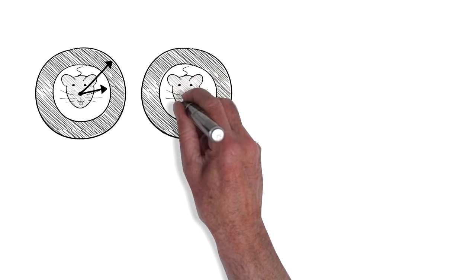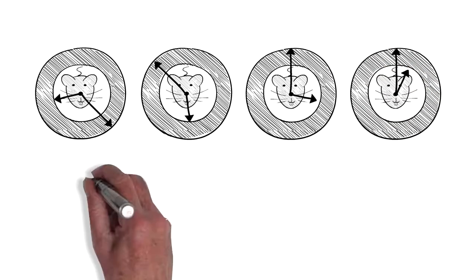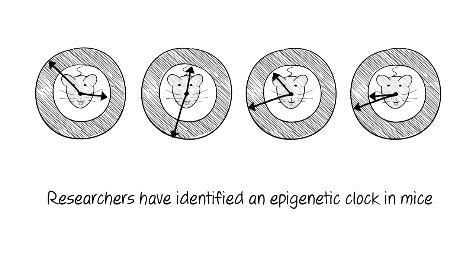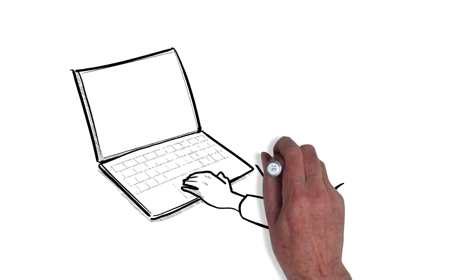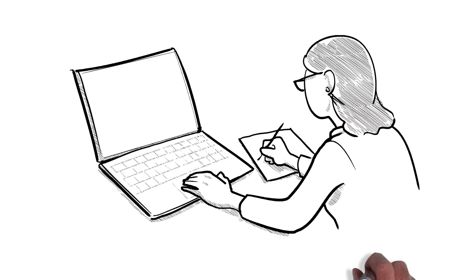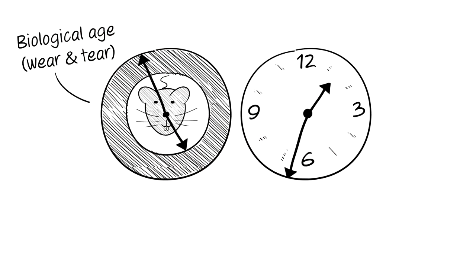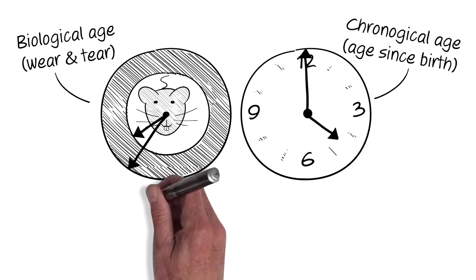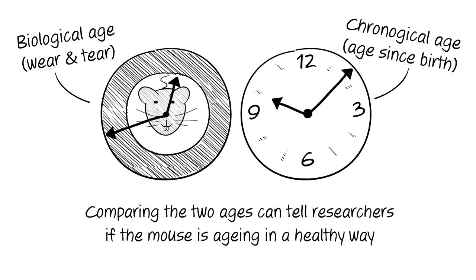Researchers at the Babraham Institute in Cambridge have identified an epigenetic clock in mice. The epigenetic clock is a computer model that uses DNA methylation to predict the age of a mouse. The model predicts the biological age of the mouse, which can then be compared to the chronological age. This can tell researchers if the mouse is ageing in a healthy way.